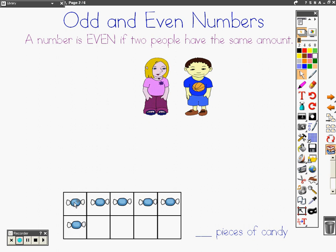Here we have six pieces of candy. When we partner them up, we can see that each one has a partner. So the number is even.